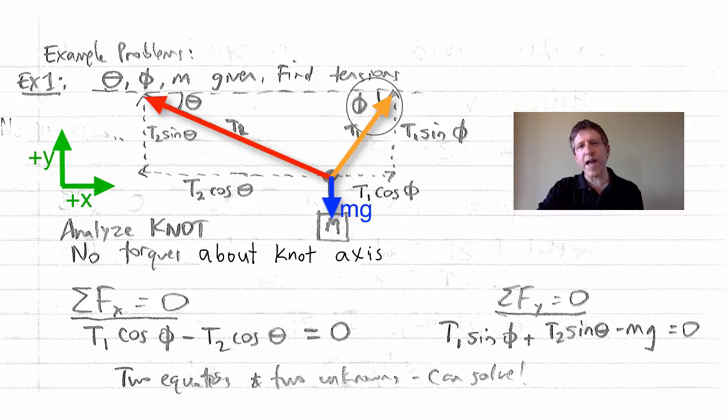On this side, if that's angle phi, this'll be T1 cosine phi, T1 sine phi, and the downward force on the knot mg.